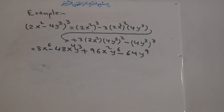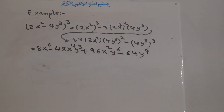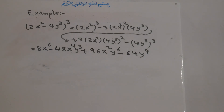You can see it becomes very easy using the identity. Otherwise, if you expand this one three times by itself, it takes a lot of time, a lot of space, and there is a higher possibility of mistakes. I think one example is enough for this identity.